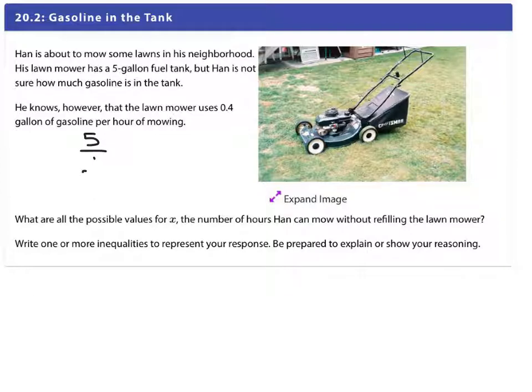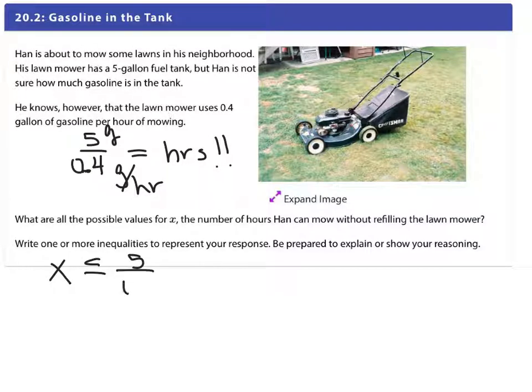So if we look at this first question, five gallon fuel tank, 0.4 gallons per hour of mowing. If I have a five gallon tank and I divide by 0.4, that right there is going to represent how many hours. Five gallons divided by 0.4 gallons per hour, if I do that division my answer would be in hours.